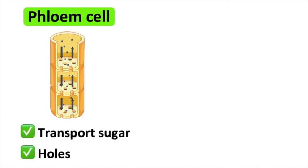For example, phloem cells. These are plant cells that build the transport system for sugars. The cell walls have holes at each end in order to allow sugar to move from one cell to the next cell.